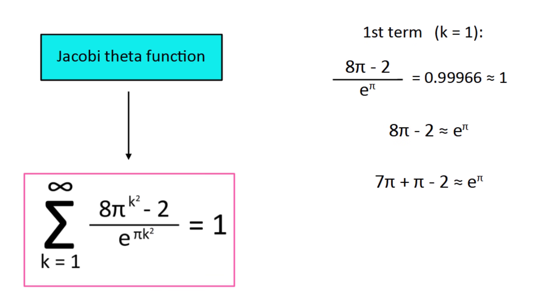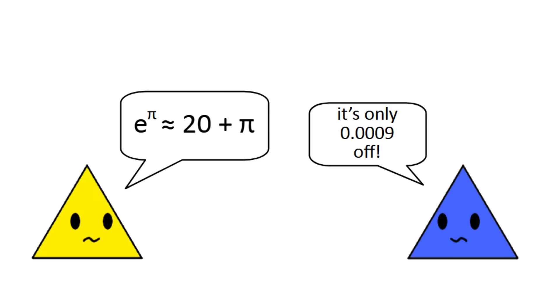And since 7 pi is approximately 22, 8 pi minus 2 is approximately 20 plus pi. But even still, the identity doesn't explain how it's this ridiculously close.